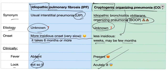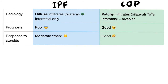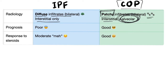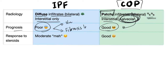Clinically: fever is absent in IPF but present in COP because COP has an '-itis' — there's fever and the patient is acutely ill (redness, hotness, swelling, pain, loss of function). On radiology: IPF shows interstitial diffuse bilateral infiltrates — only interstitial. COP shows interstitial plus chronic alveolitis, so you see patchy infiltrates, not diffuse. Prognosis is poor with IPF. It's good with COP — excellent response to steroids. In IPF, there may be initial response to steroids or anti-fibrotic therapy, but ultimately the fibrosis is irreversible. Steroids are only useful in the early stage, not the late fibrotic stage.